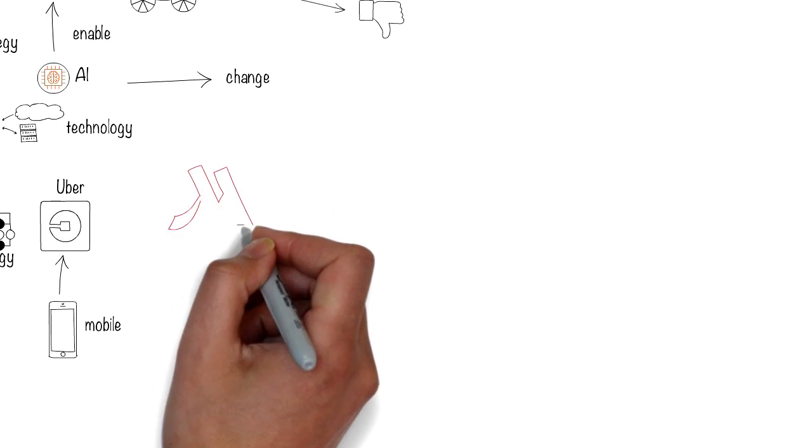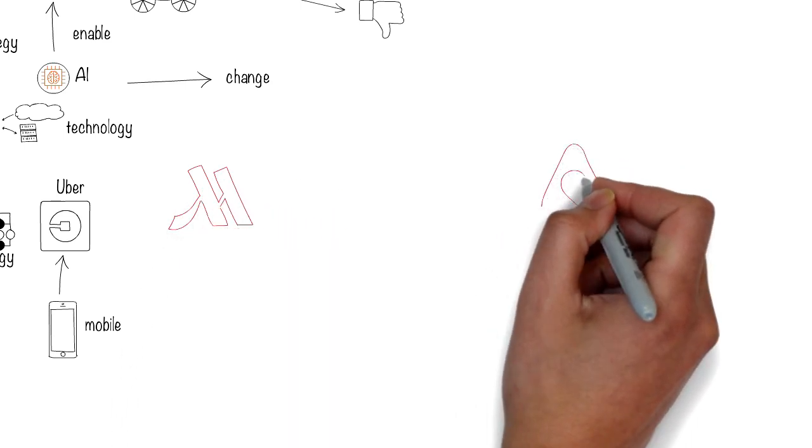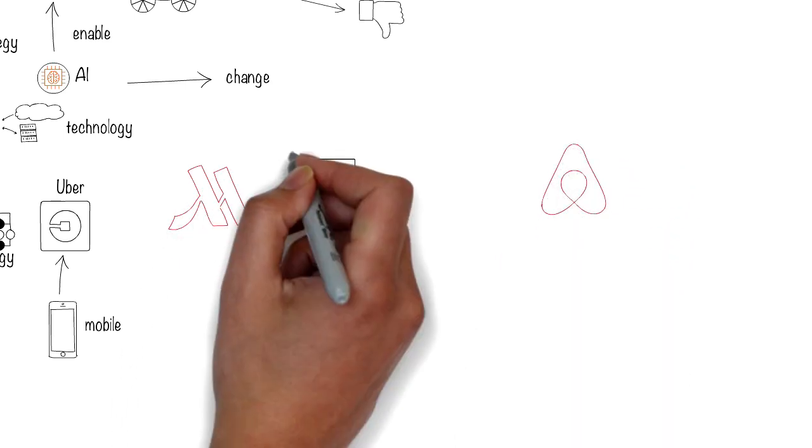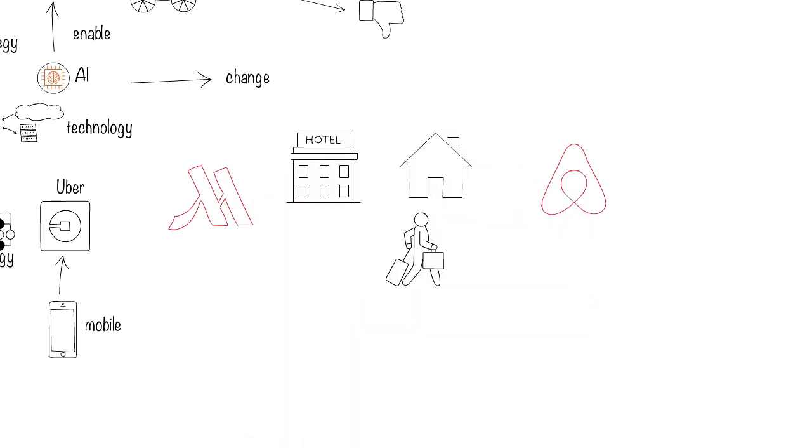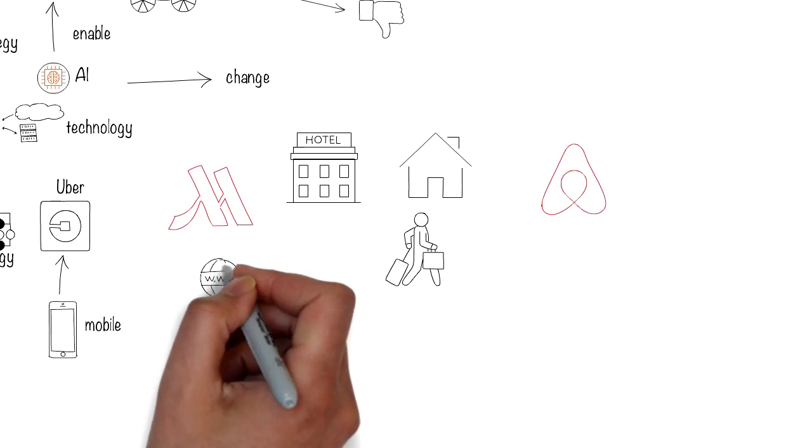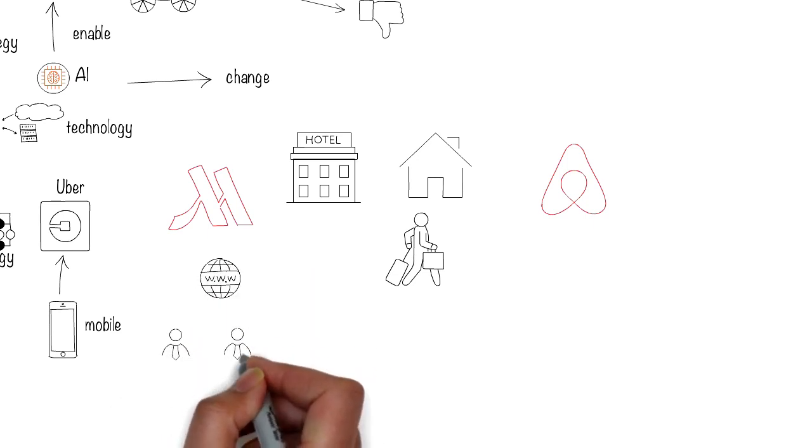Marriott and Airbnb both enable travelers to stay in places when they travel, but their business models are completely different. Marriott uses the internet to enable its business, having their customers book rooms through it.